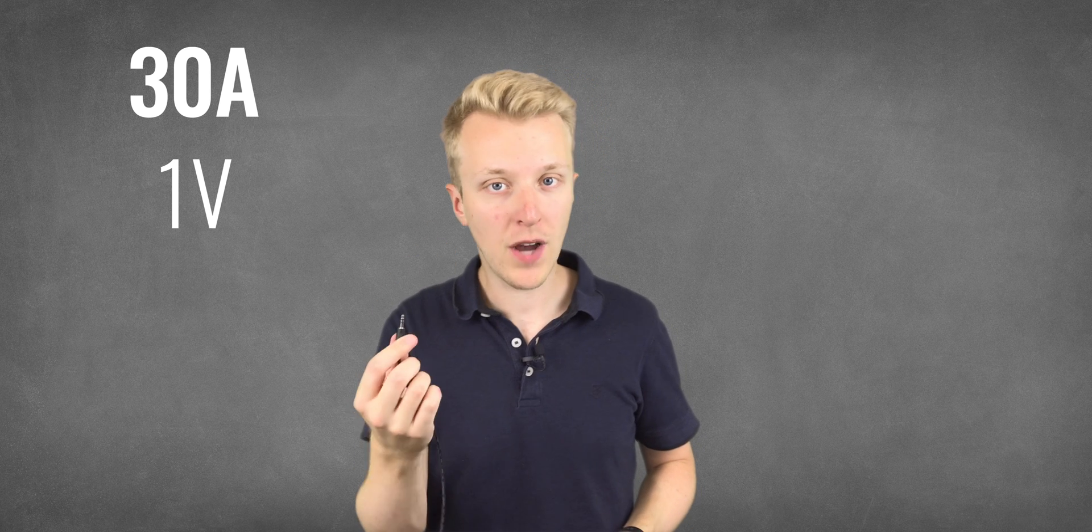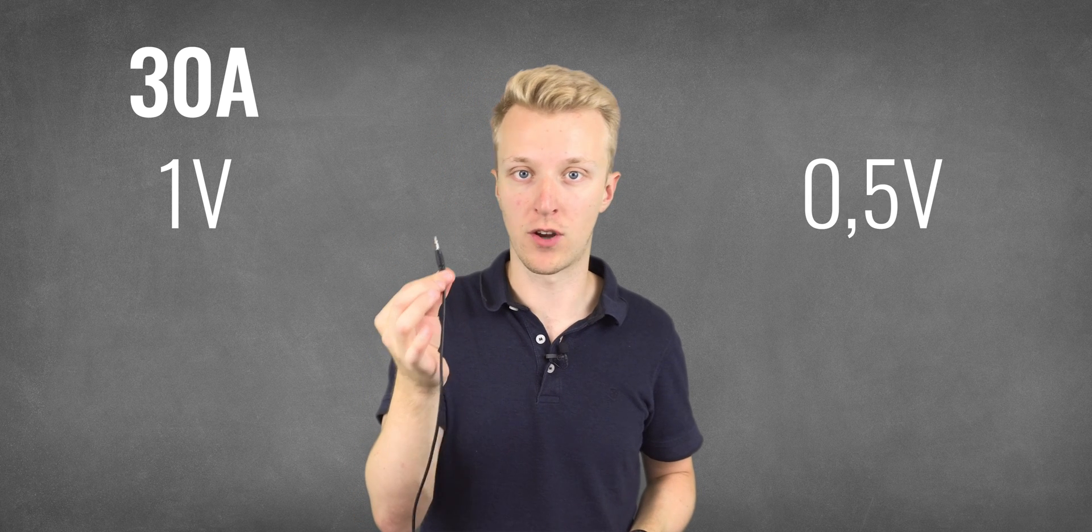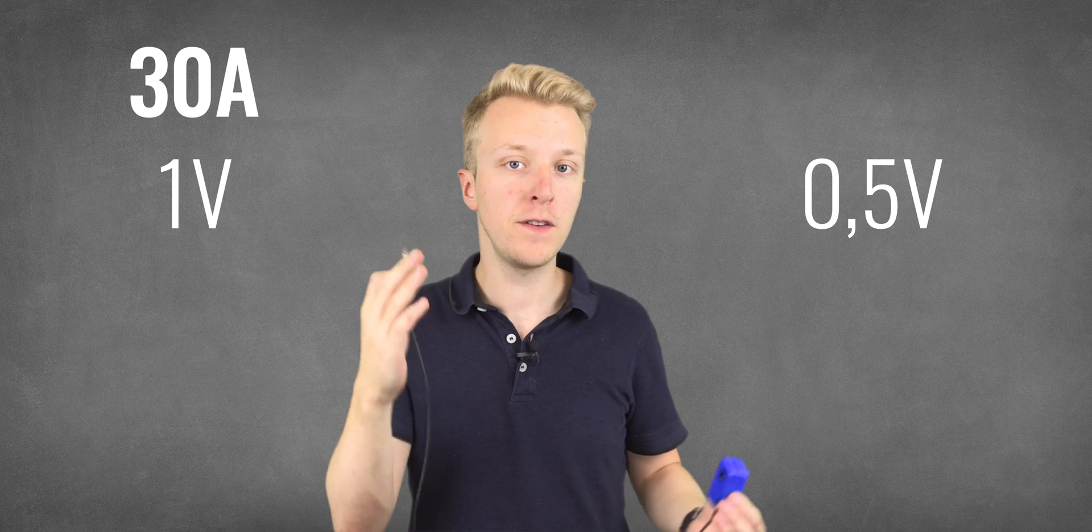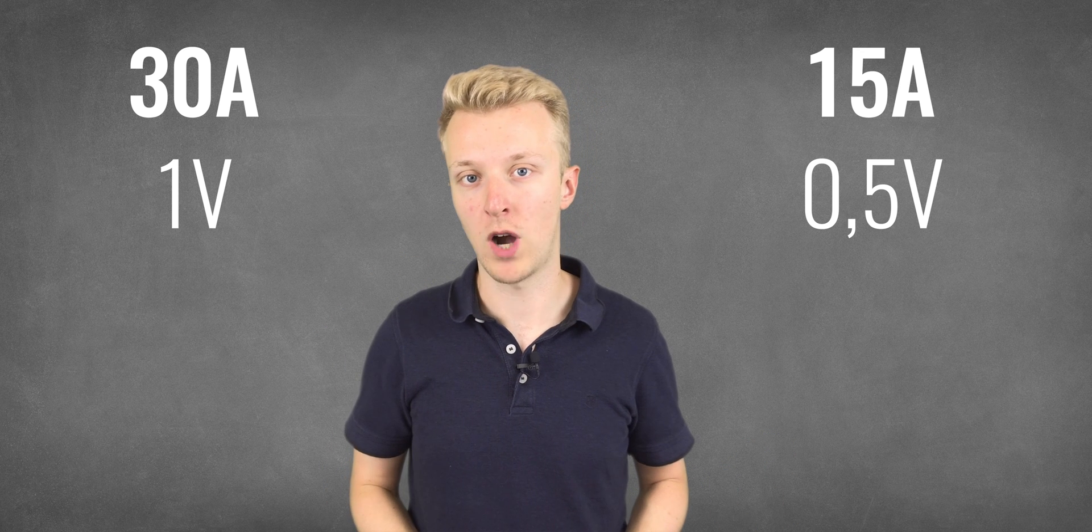And again, the output of a CT sensor is proportional. This model can sense up to 30 amps of current flowing through a wire, at which point it will output 1 volt. If however we measure half a volt on its output, then we know that 15 amps are flowing through the main wire.